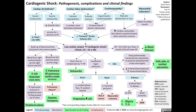In the skin, because the body preferentially vasoconstricts the extremities to preserve blood and warmth to key vital organs, and because arterial blood is red and venous blood tends to be blue, there is reduced arterial blood and increased venous blood in the skin, resulting in cold, pale, or mottled extremities.